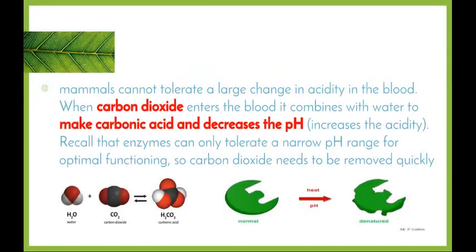So mammals cannot tolerate a change in the acidity in the blood. When the carbon dioxide enters the blood, it combines with water to make carbonic acid and decreases the pH, which obviously leads to an increase in the acidity. So we recall that enzymes can only tolerate a narrow pH range for optimal functioning, and that depends on where in the body the enzyme works. So if the enzyme works in the stomach, it will be able to already withstand a fairly low pH, but if that pH decreases further, then it will begin to denature. Enzymes in the intestines require a slightly higher pH, and therefore, any decrease in the pH is going to have a fairly large effect on the enzymes.